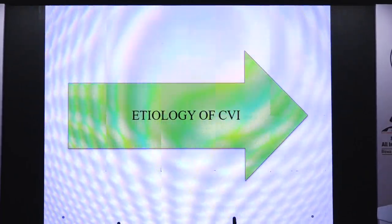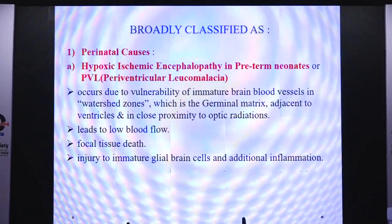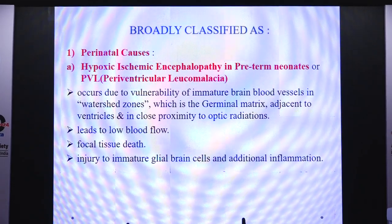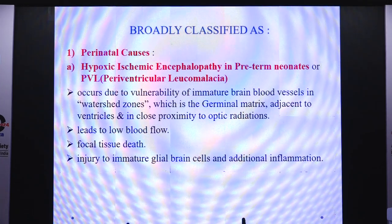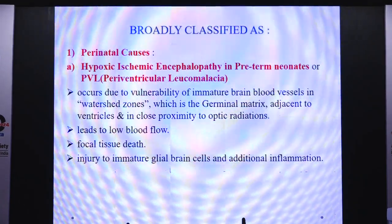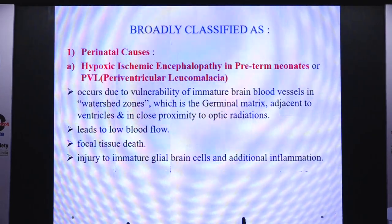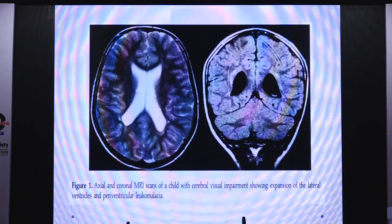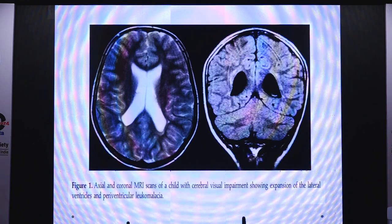The etiology of CVI can broadly be classified as perinatal causes, which includes hypoxic ischemic encephalopathy in preterm neonates, or PVL — periventricular leukomalacia. It occurs due to vulnerability of the immature brain blood vessels in the watershed zones, which is the germinal matrix adjacent to the ventricles and in close proximity to the optic radiations. It leads to low blood flow, focal tissue death and injury to immature glial brain cells, and additional inflammation. An MRI scan showing lateral ventricle expansion and periventricular leukomalacia illustrates this.